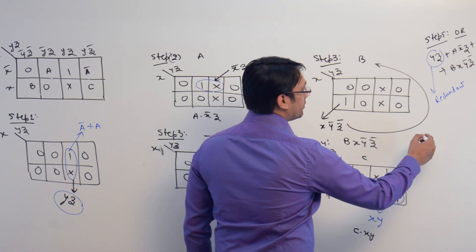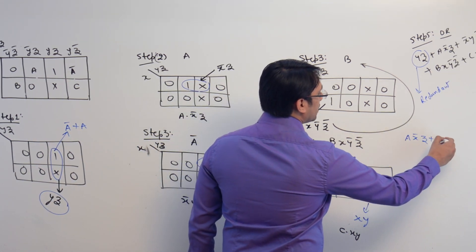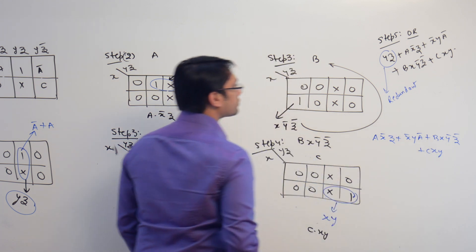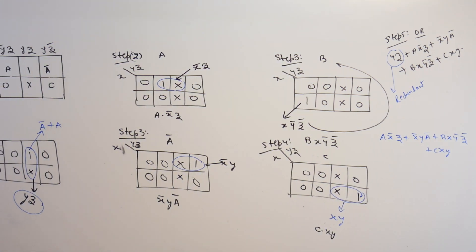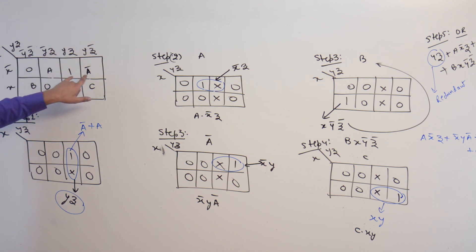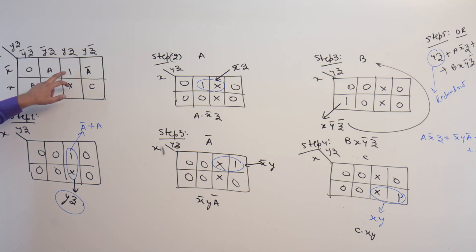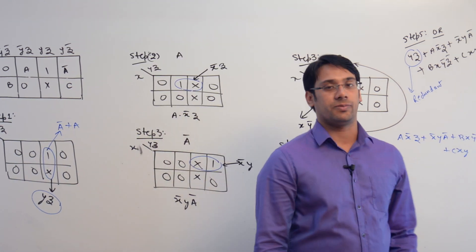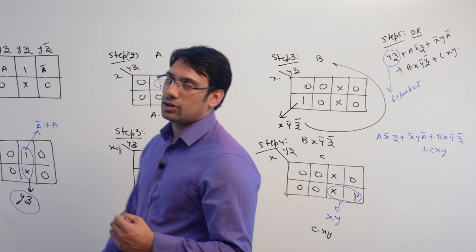Since yz is already covered by both a and a complement, we can eliminate it. The final solution equation becomes: a x complement z + x complement y a complement + b x y complement z complement + cxy. Generally, if a one is covered by both a variable and its complement, that separate term becomes redundant. This is how you solve an expression using variable entrant K-maps.